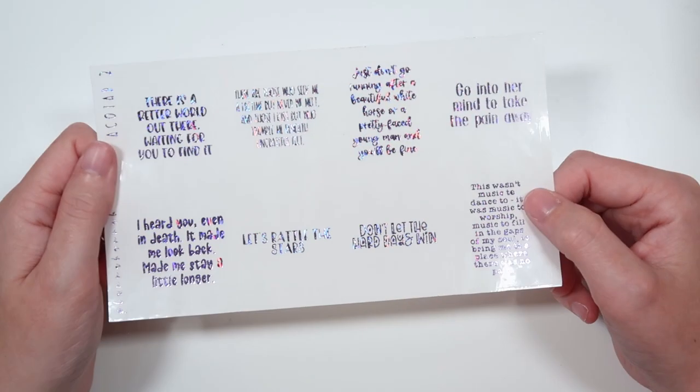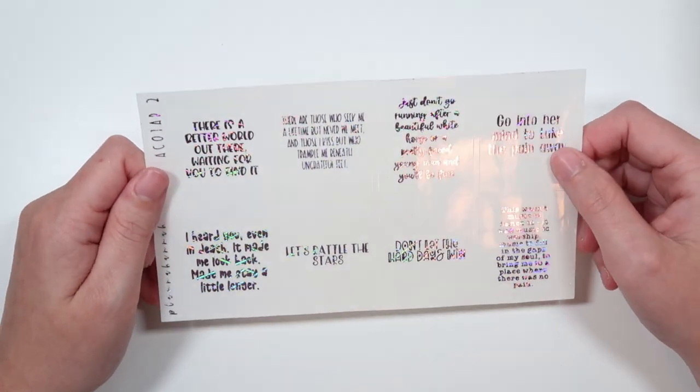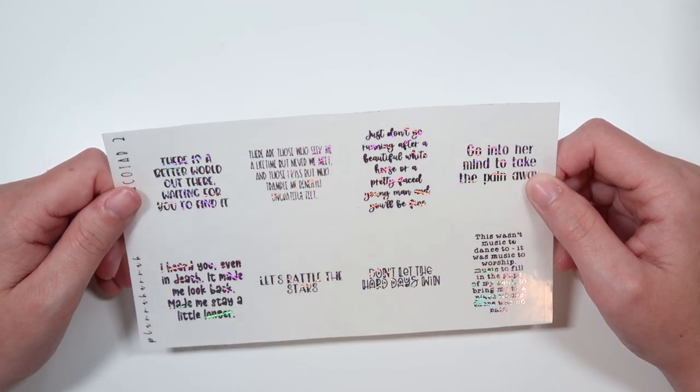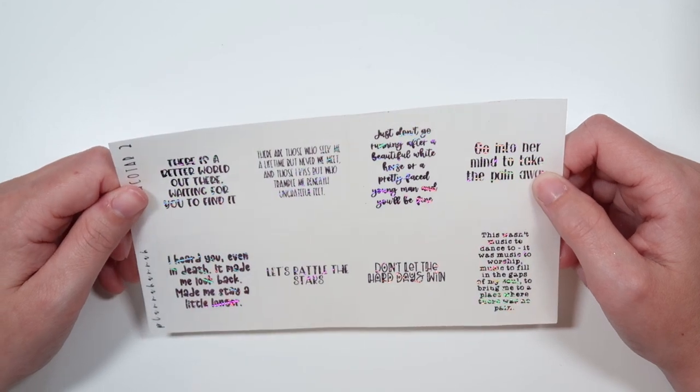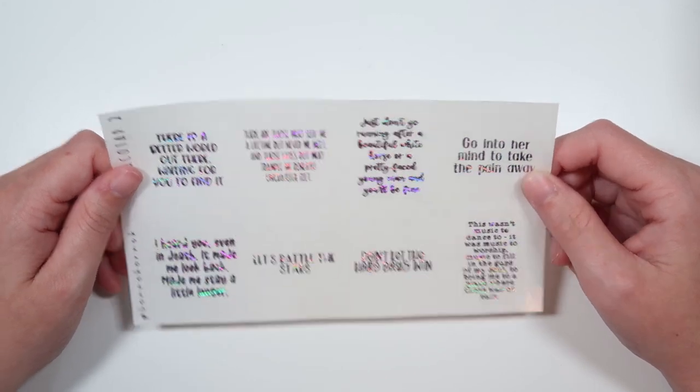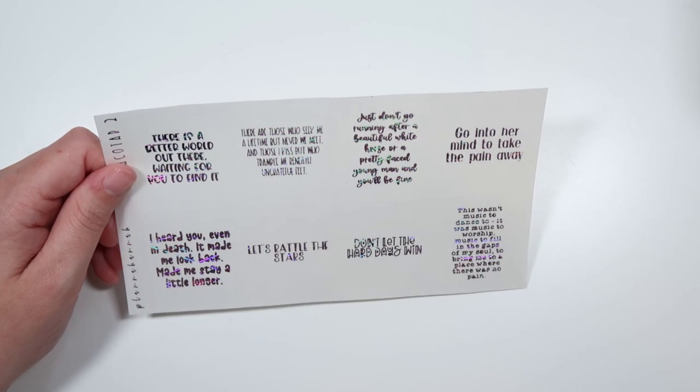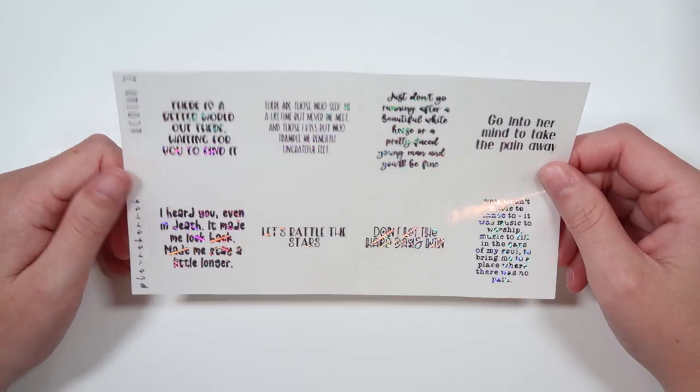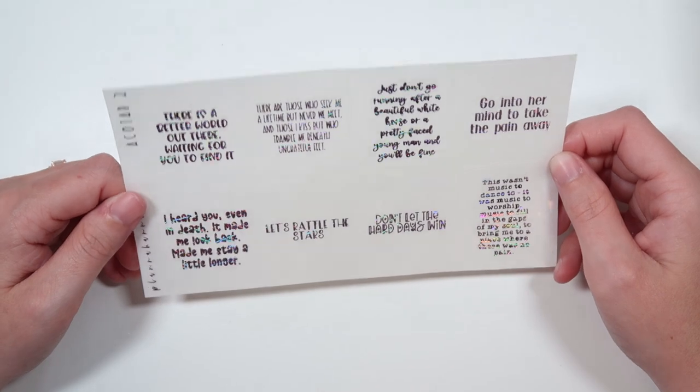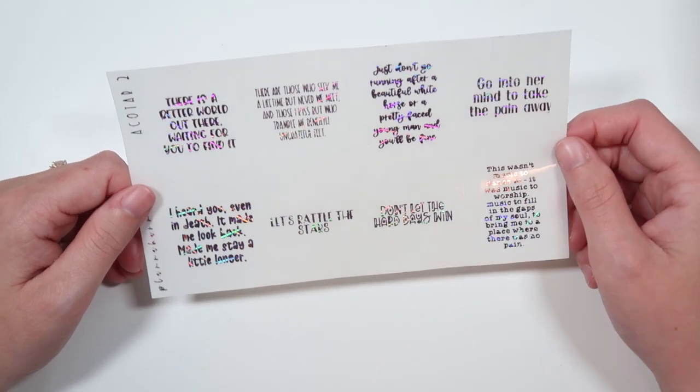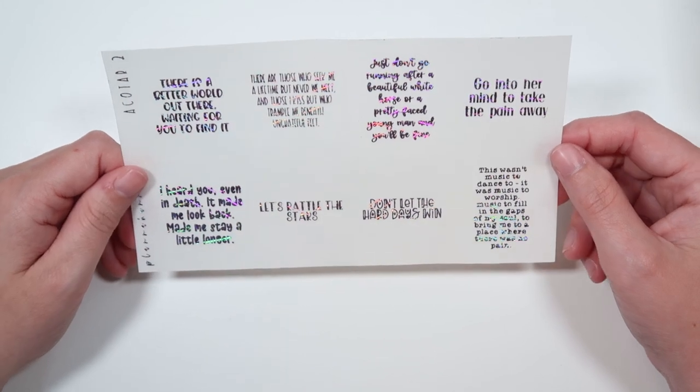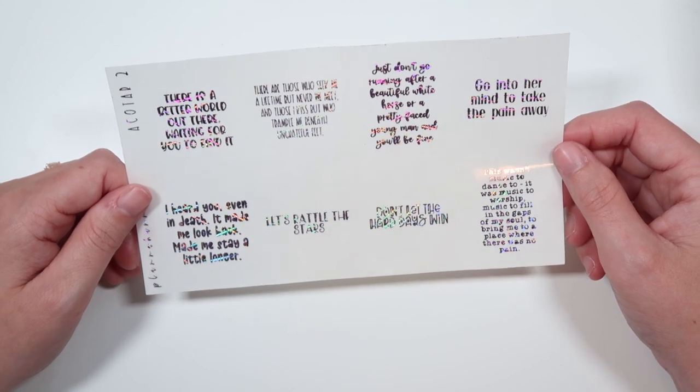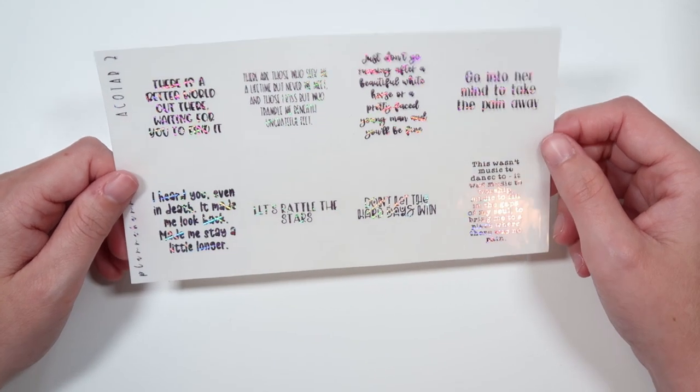And the second one, this is being shown in confetti purple, we have there is a better world out there waiting for you to find it. There are those who seek me a lifetime but never we meet. And those I kiss but who trample me beneath ungrateful feet. Just don't go running after a beautiful white horse or a pretty-faced young man and you'll be fine. Go into her mind and take away the pain. I heard you, even in death, it made me look back, made me stay a little longer. Let's rattle the stars. Don't let the hard days win. And this wasn't music to dance to. It was music to worship, music to fill in the gaps of my soul. To bring me to a place where there was no pain.